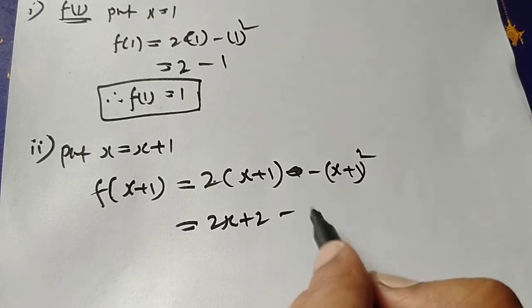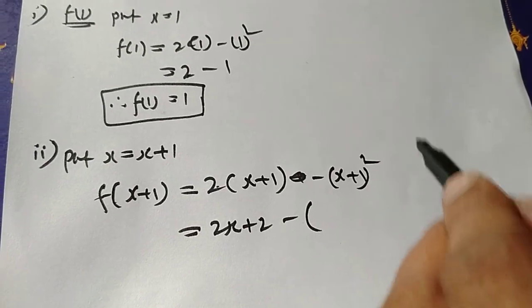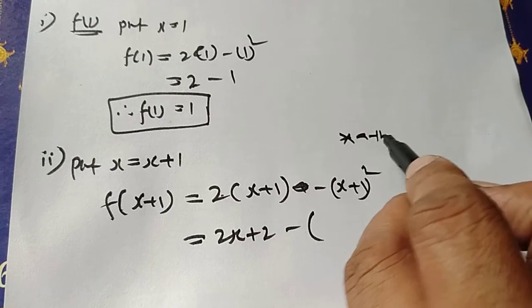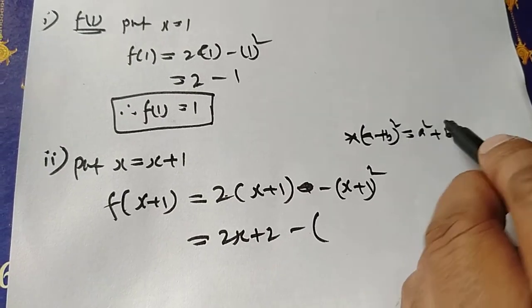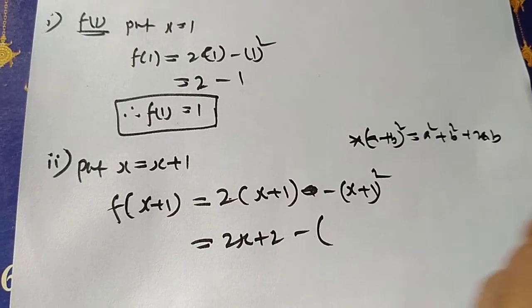Minus a plus b all square. So the formula here: a plus b all square equal to a square plus b square plus 2ab.